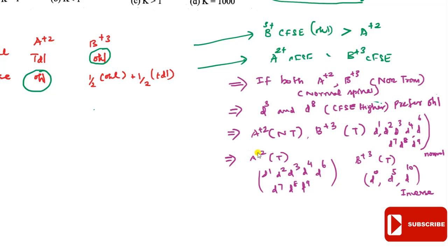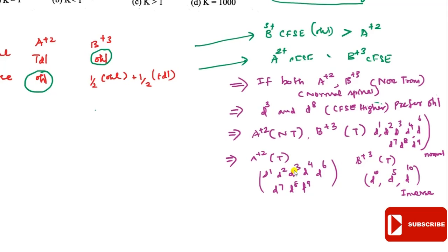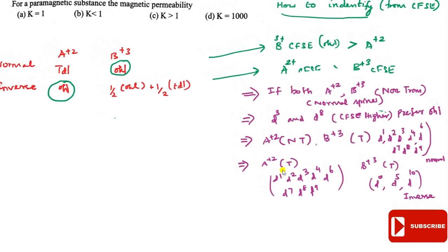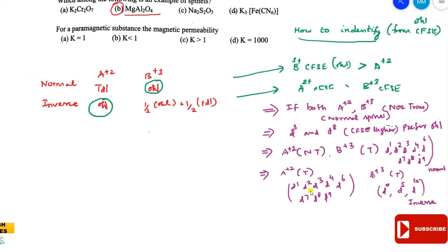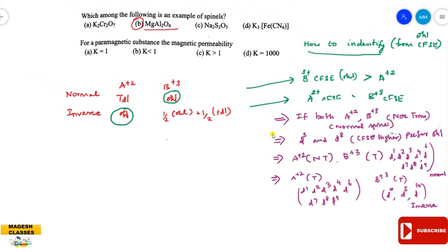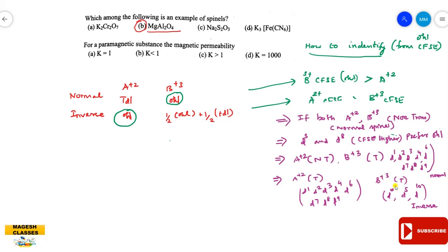In the case where the dipositive ion has D1, D2, D3, or D4 configuration and B³⁺ is D0, D5, or D10 (CFSE = 0), the dipositive CFSE value is greater. Since the dipositive is greater, in this case it is inverse spinel.